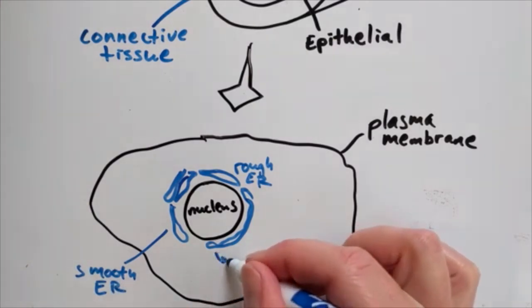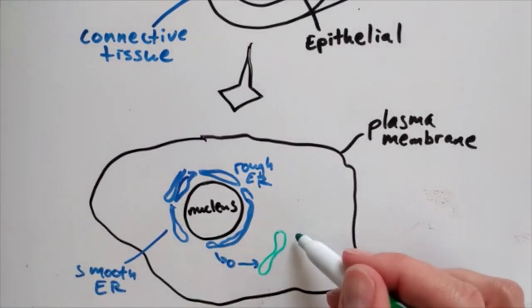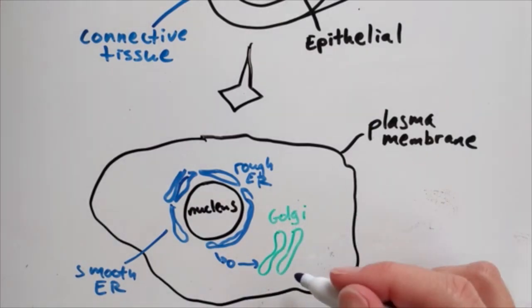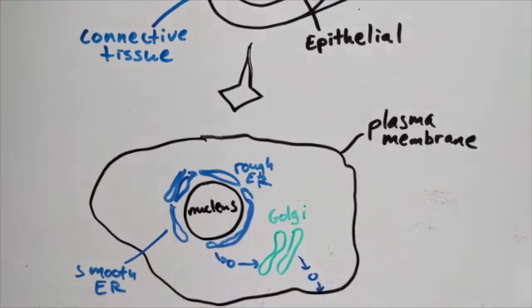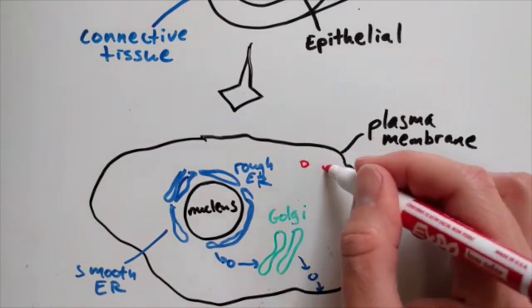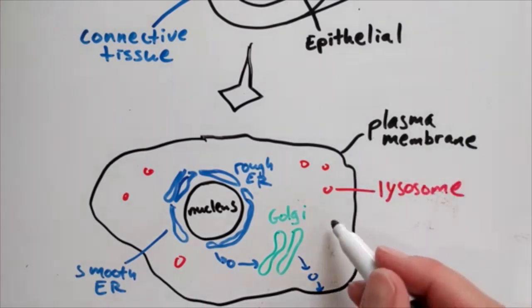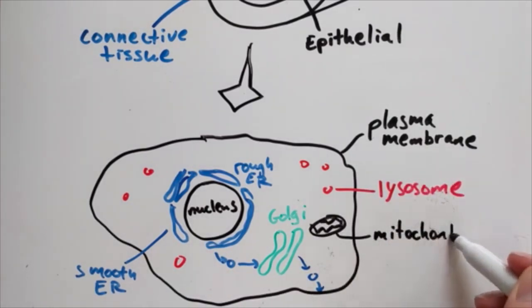Newly made proteins may be transported from the ER to the Golgi apparatus to be processed and sorted for their final destination in the cell or outside of the cell. Lysosomes degrade old proteins and cellular debris. Mitochondria produce cellular energy needed for the cell to function.